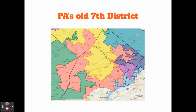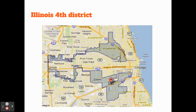Probably the most gerrymandered district right now is Illinois's fourth district, where the entire shape is one district and everyone in between has a different representative.